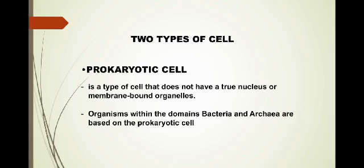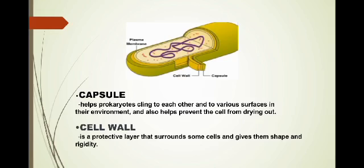The next type of cell is the prokaryotic cell. When we say prokaryotic cell, it is a type of cell that does not have a true nucleus or membrane-bound organelles. And it is an organism within the domains bacteria and archaea are based on the prokaryotic cell. So there are parts of the prokaryotic cell.